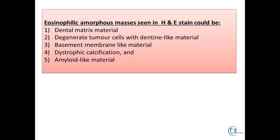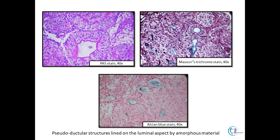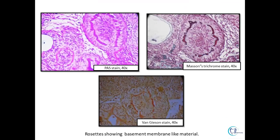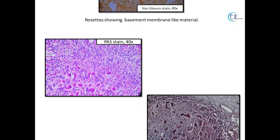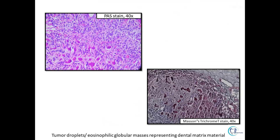These cannot be distinguished on H&E alone, so special stains are required. The duct-lining cells resemble pre-ameloblasts; thus the ductal areas showing positive staining can depict failed induction or abortive enamel formation. The pseudoductal areas lined by amorphous material represent areas of failed induction. Tumour cells in the rosettes are separated from adjacent cells by a basal lamina-like zone, and PAS-positive areas in the rosettes represent basement membrane-like material. Tumour droplets and eosinophilic globular masses represent dental matrix material, dystrophic calcification, or uncalcified amorphous material.